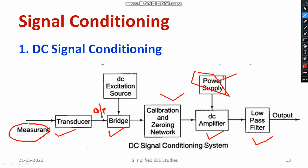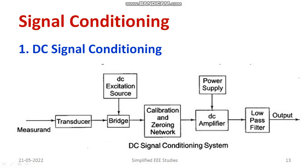Afterwards, the signal is connected to the calibration network, where proper calibration and zero-closing are performed. The signal then needs to be amplified, so a DC amplifier is used to increase the amplitude. To operate the DC amplifier, we need a DC power supply. The output of the amplifier contains high-frequency signals and noise that need to be filtered out using a low-pass filter before connecting to data acquisition devices or the output.